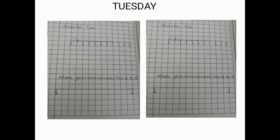Tuesday: Open your maths copy and make a straight line, meaning a number line, two times. Done in maths copy.